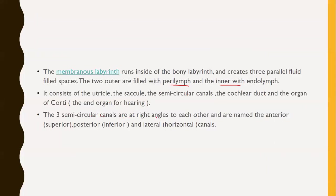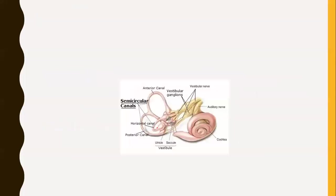The three semicircular canals are at right angles to each other: the anterior, present on the superior part; the posterior, seen on the inferior part; and the lateral, positioned at the horizontal level. In this picture you can see the cochlea and the three semicircular canals - the horizontal canal, the posterior canal, and the anterior canal - all situated at right angles to each other.